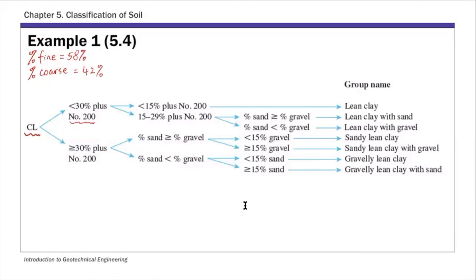So that means basically the coarse fraction. So this coarse fraction, we have 42%. This is basically retained above number 200. So that's that coarse portion.